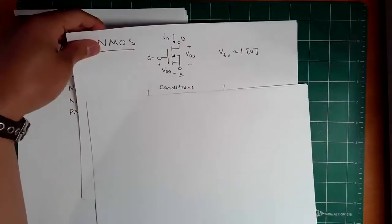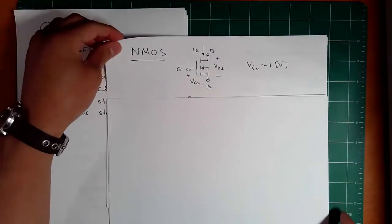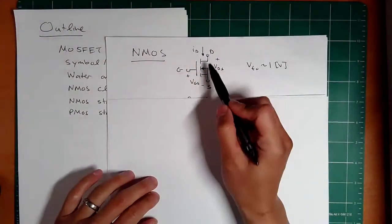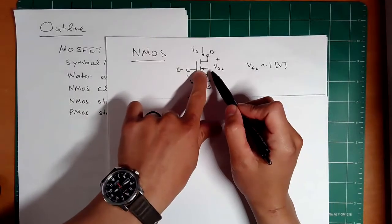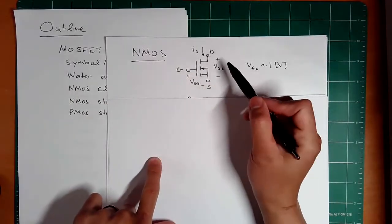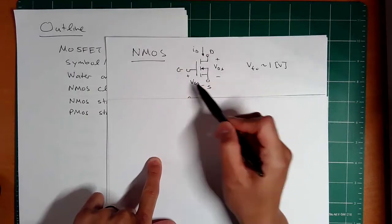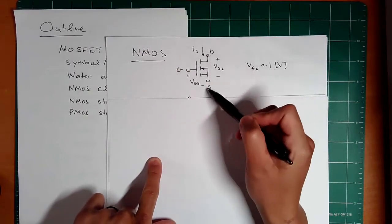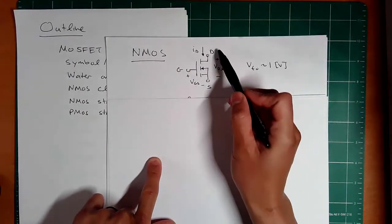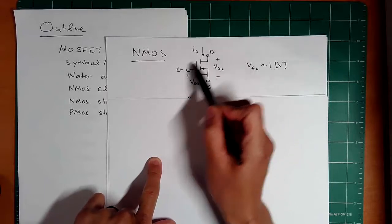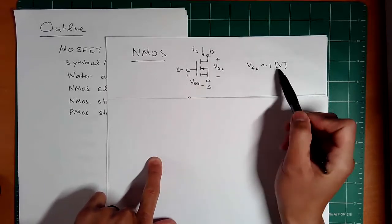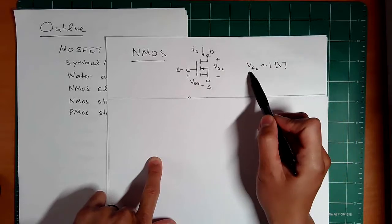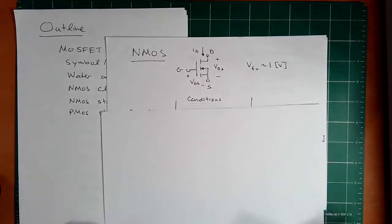I have the NMOS and PMOS broken out into a chart, so here we have the NMOS symbol. Remember, as opposed to the BJT NPN, we have the arrow going in, gate drain source, kind of like the base collector emitter. We have VGS and VDS and ID. Remember, no gate current going into the gate terminal here. And imagine we have a threshold voltage, VTO, of approximately one volt.